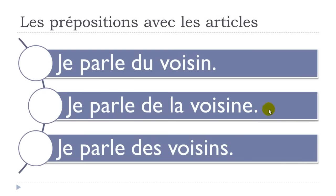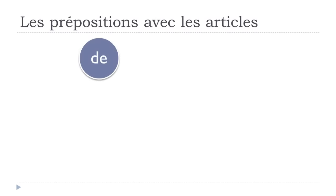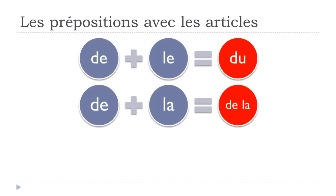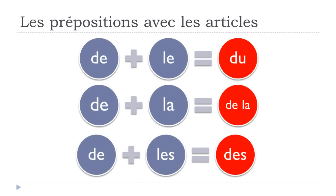For the plural, as with À, changes happen: je parle des voisins — the plural form of neighbors. So to summarize: masculine — DU; feminine — DE LA; and the plural, whether masculine or feminine, will be the same: DES. DE plus LE becomes DU; DE plus LA stays the same; and DE plus LES becomes DES.